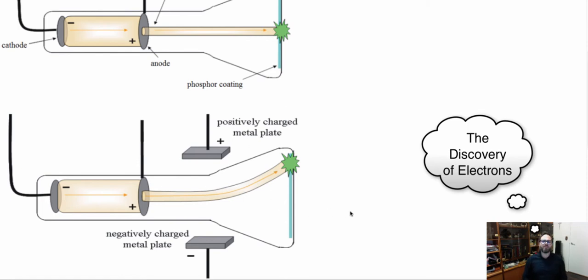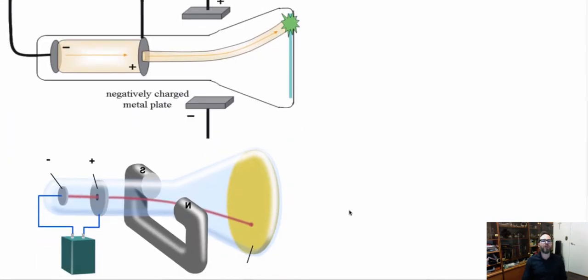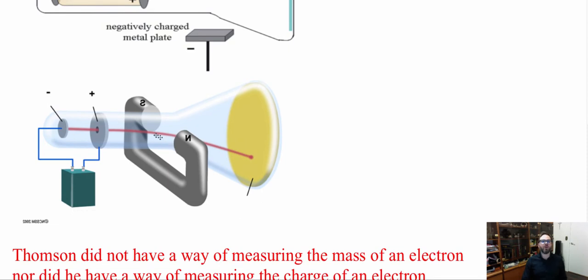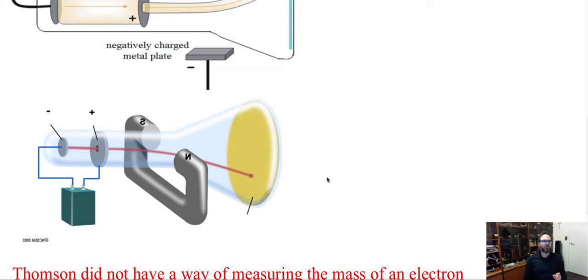Then he started thinking about magnetism. He said: if I have an electric charge moving, that should cause a magnetic field. So he put the cathode ray through a magnetic field and noticed that the charge bent down. By doing both experiments he was able to prove that this is in fact a charged particle, smaller than an atom. Since it's being released from the metallic atoms, it must come from those atoms — but the atoms themselves are neutral. From this, he was able to discover the electron.